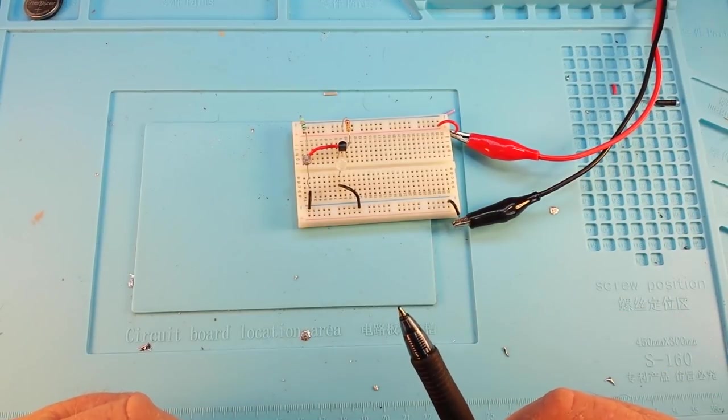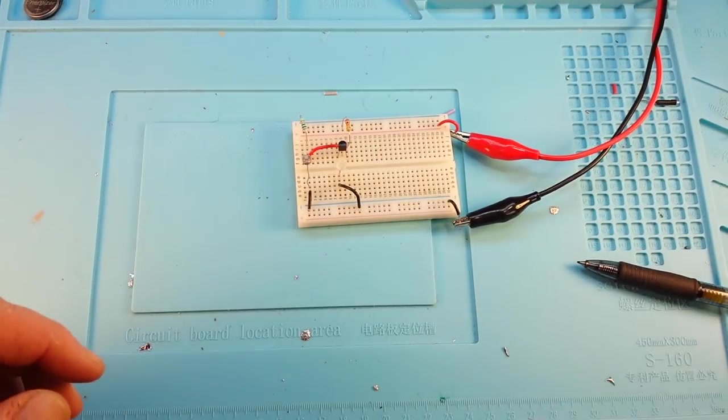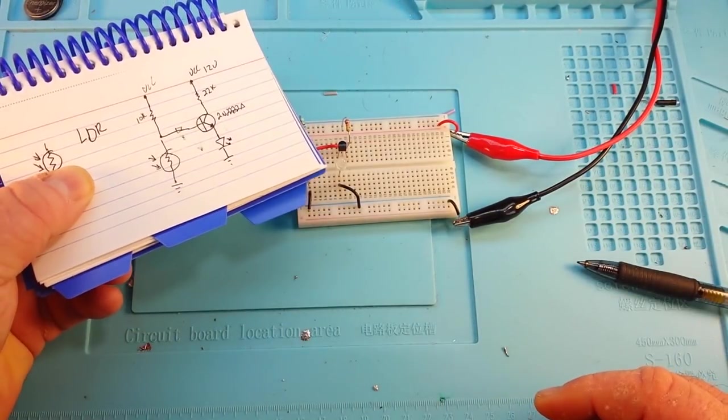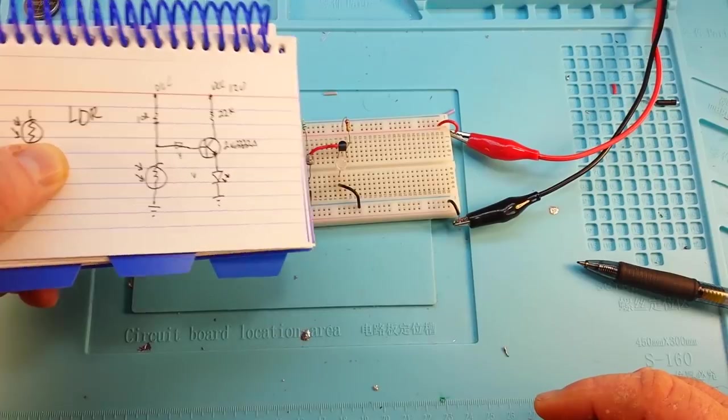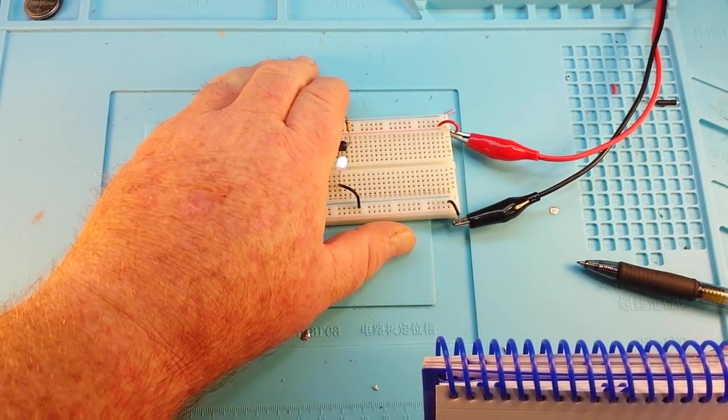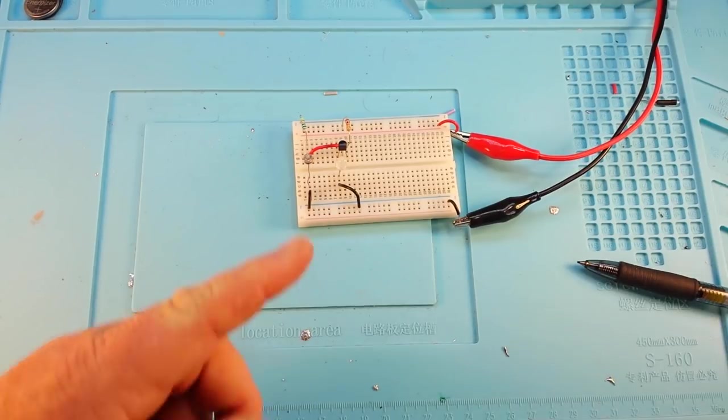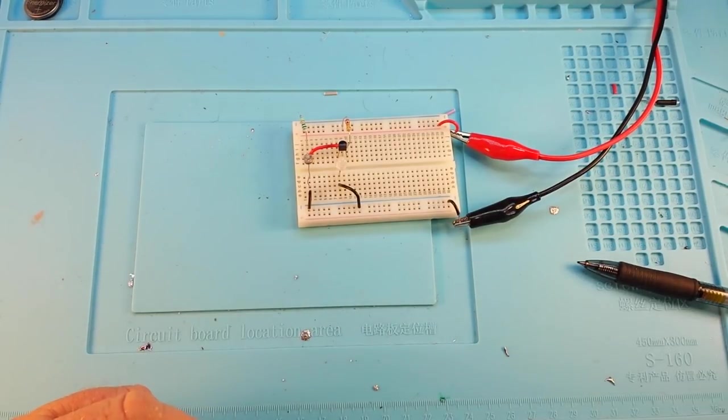So here's your quiz of the day. This circuit turns on when it gets dark. How do you make this circuit, using the same components, turn on when it gets light? Put your answer in the comment down below.